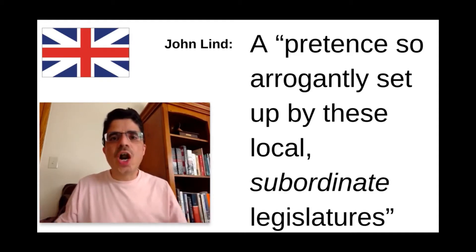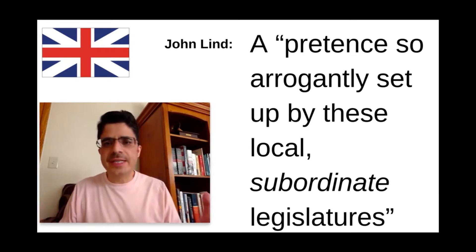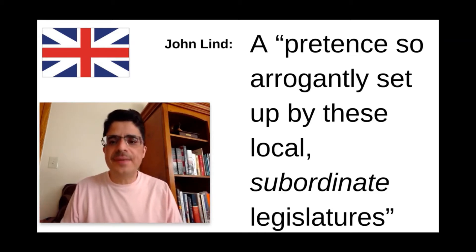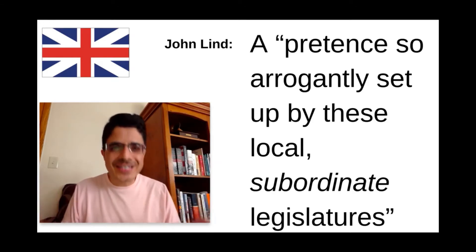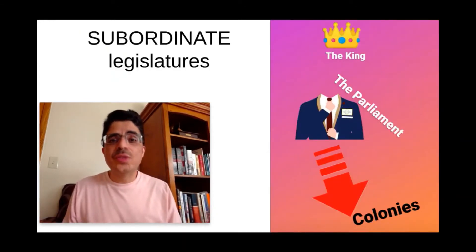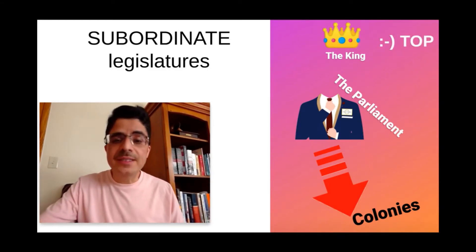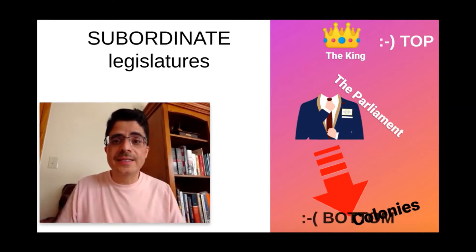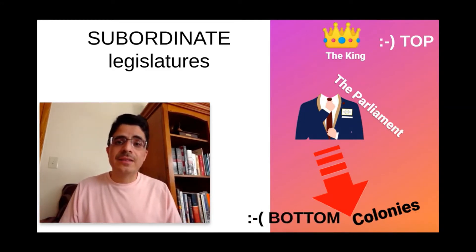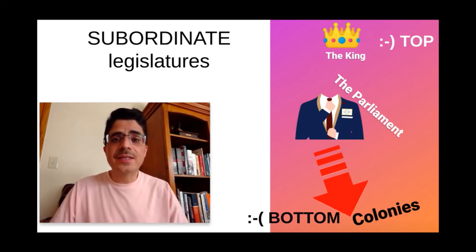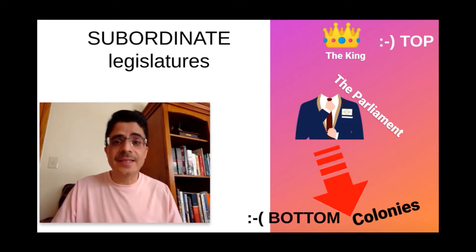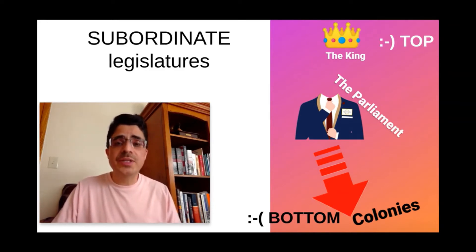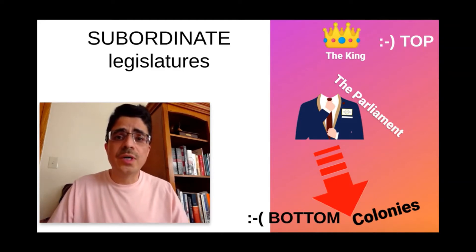So John Lind called the argument against the quartering of soldiers a pretense — something fake — and it's so arrogantly set up by these local subordinate legislatures. This is what subordinate legislators look like: you have the king at the top, you have parliament, and then of course you have the colonies way at the bottom. Were the 13 colonies and their assemblies subordinate legally to the British crown? Well, yes, technically they were. And so that's why they were declaring their independence, so that they could no longer be subject to the wishes of those who were in power.